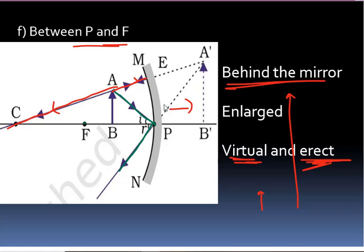You might have noticed that there are six positions of the object, and with respect to each, there are six different positions of the image. In the first five positions of the object, a real image is formed. Only when the object is placed between P and F is a virtual image formed. This could be a short-answer question: for which position of the object is a virtual image formed? The answer is between P and F.